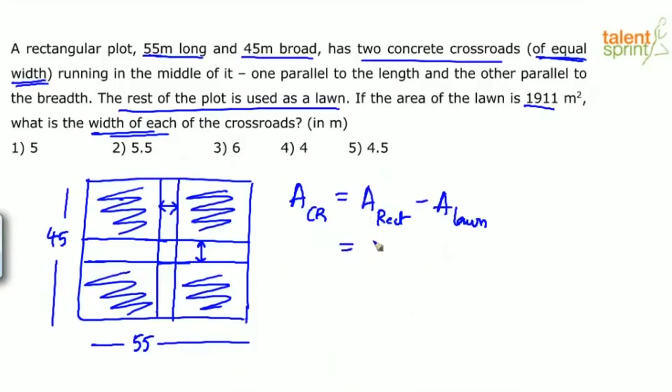Area of rectangle will be 55 into 45. Area of rectangle is length into breadth, both of which are given to us. Minus area of lawn is straight away given as 1911. 55 into 45 will be 2475. You can take 55 as 50 plus 5, and 45 as 50 minus 5, so that will be the form of a plus b into a minus b, which is a squared minus b squared. So 50 square minus 5 square will be 2475. 2475 minus 1911 will give you 564, 564 meters squared. This is the area of crossroads.